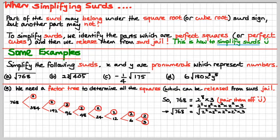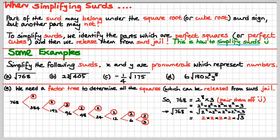The square root of 768 would be the square root of all that. As you know, the square root of 2 squared is 2. So that's the first one out of square root jail, there's the second, there's the third, and there's the fourth out of square root jail. Poor old 3, I'm afraid, has to stay there — he's stuck in square root jail. We multiply all those 2s together: 2 times 2 is 4, 4 times 2 is 8, 8 times 2 is 16. So it's 16 root 3. That's the answer.